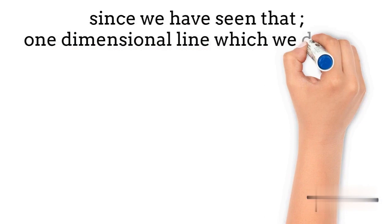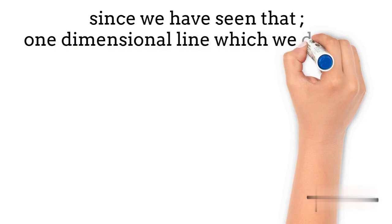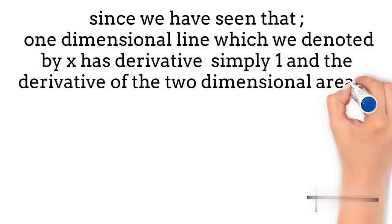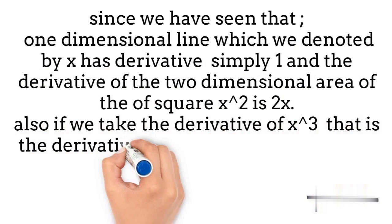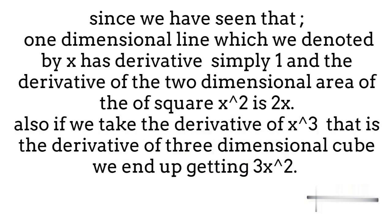We have seen that one dimensional line which we denoted by x has derivative simply one, and the derivative of two dimensional area of the square x square is 2x. Also, if we take the derivative of x cube that is the derivative of three dimensional cube we end up getting 3x square.